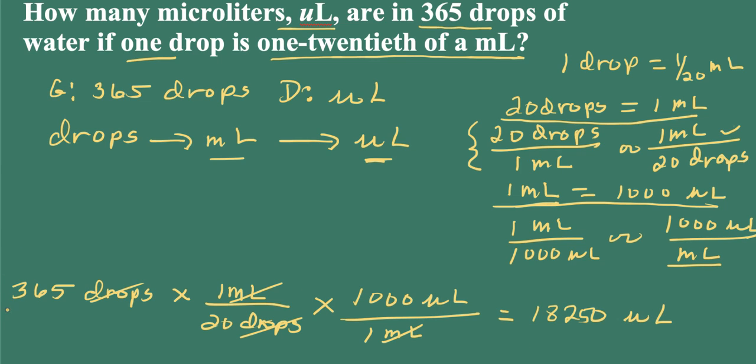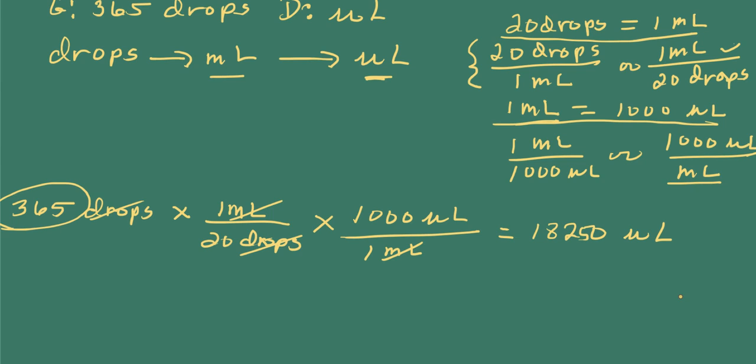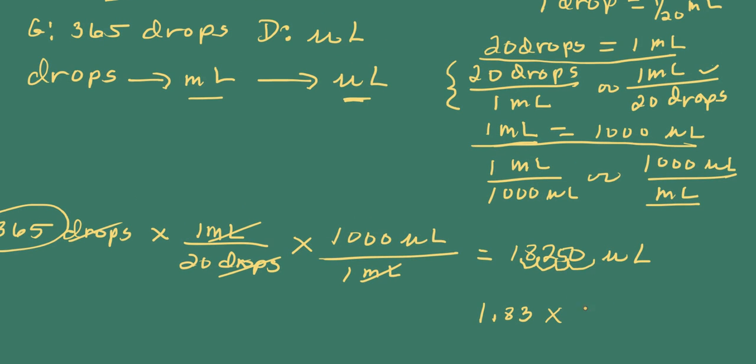microliters. Now, I started off here with three significant figures. So I have to go ahead and round this answer. Remember, the conversion factors are exact. They do not affect the number of significant figures. So I will move my decimal point one, two, three, four places. So I have 1.83 times 10 to the fourth microliters.